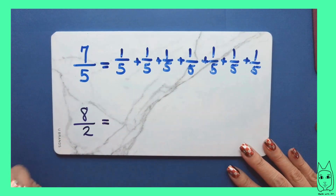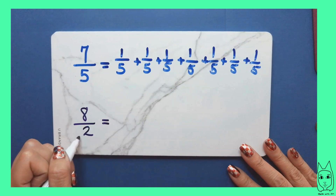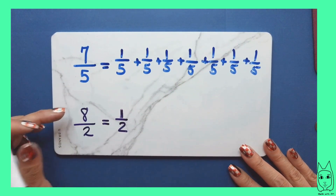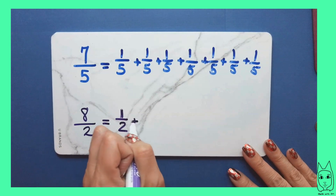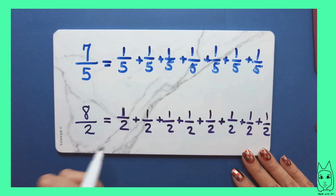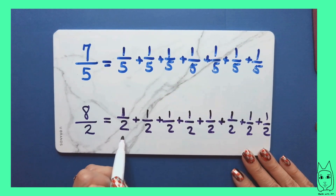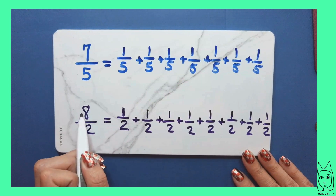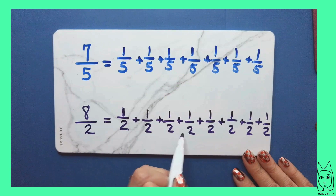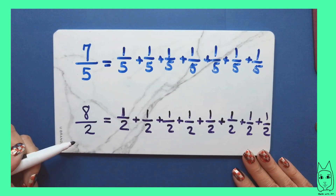For this example, our unit fraction is one half — eight halves. I would need eight unit fractions. The eight is saying that we have eight of those parts, each represented by the unit fraction one half. I have eight of those, so I have eight one-halves to make eight halves.